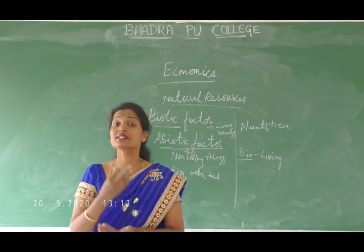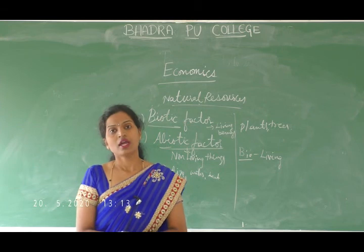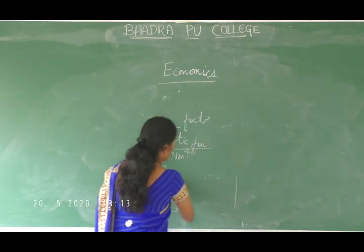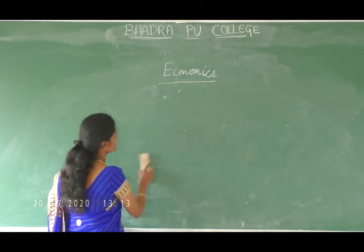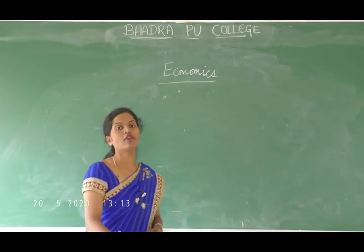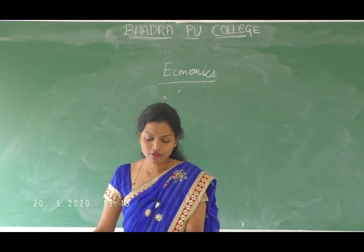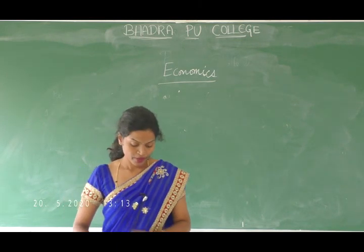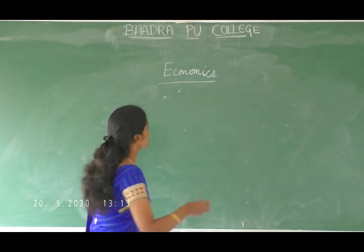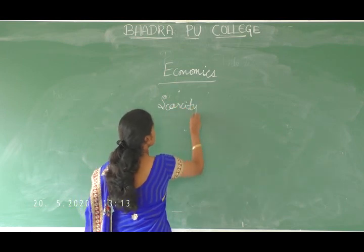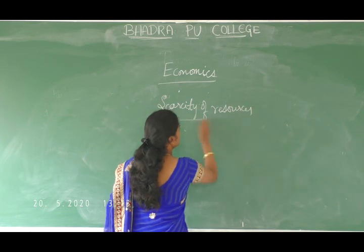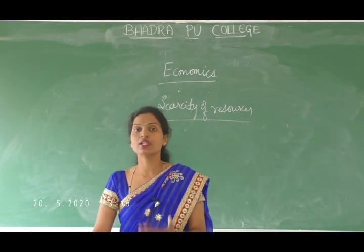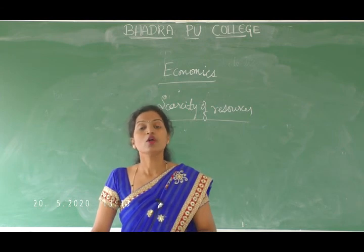There is a scarcity of resources in our economy. Why does scarcity arise? There are unlimited human wants but limited resources, so scarcity arises. It might also be due to overpopulation — a huge population.